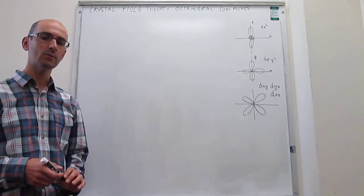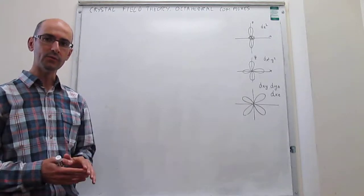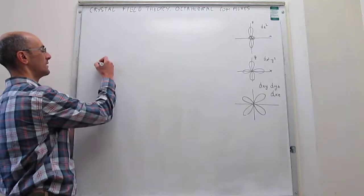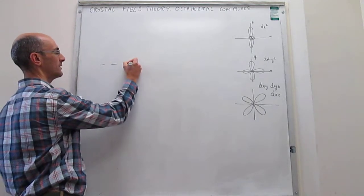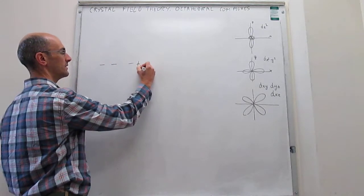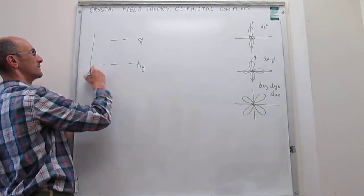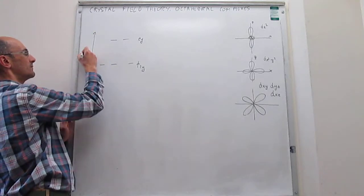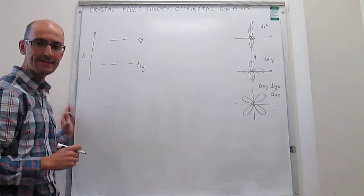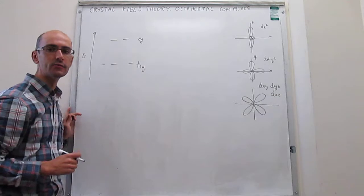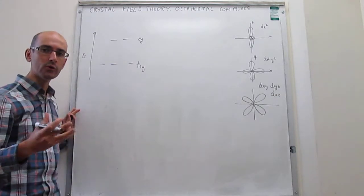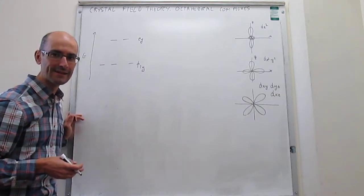This leads to a splitting between d-orbitals between a set of three that we call t2g and a set of two orbitals that we call eg. This is how the orbital diagram looks like for the d-orbitals in transition metal complexes when you are in an octahedral ligand environment.